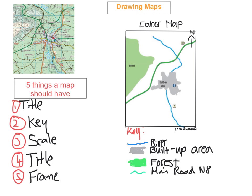I've taken the OS map and drawn out how the map should actually look with these five things on it. The first one is a title — I've called this the character map, which is the name of the town. The second is the key, done down here. The key must represent everything in the drawing, so if you do the river in blue, it must be represented in the key. If you don't do a key, you won't get any marks.